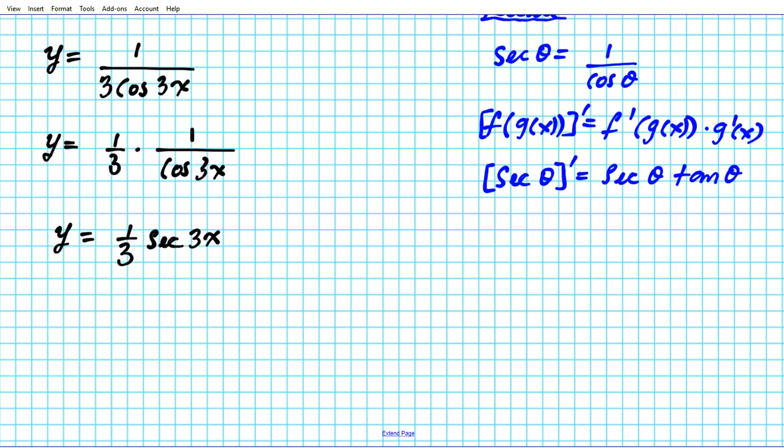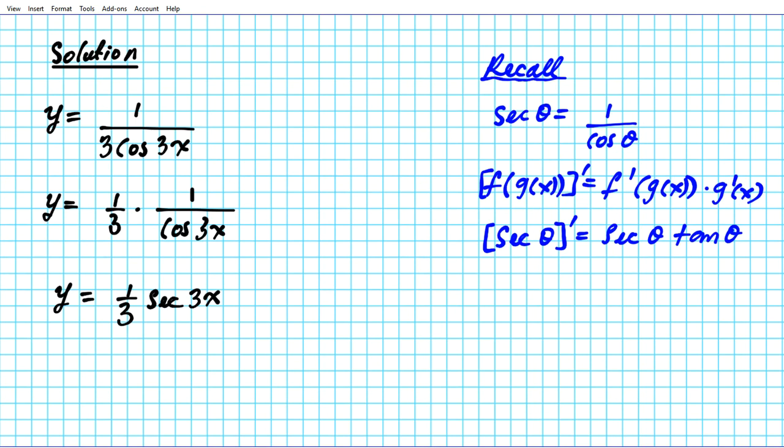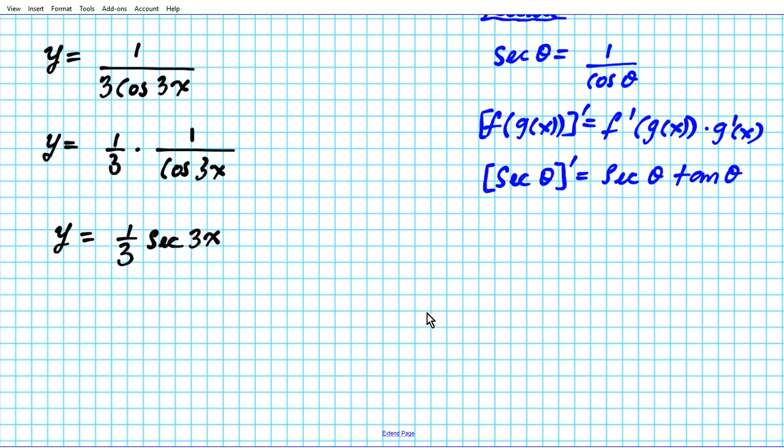Okay, so what we have here is a composite function. We have a composition of a trig function, secant, and a linear function, 3x. So to apply the chain rule we're going to decompose it. The outer function, one third and secant, we're going to call that f. f of x is one third secant x.